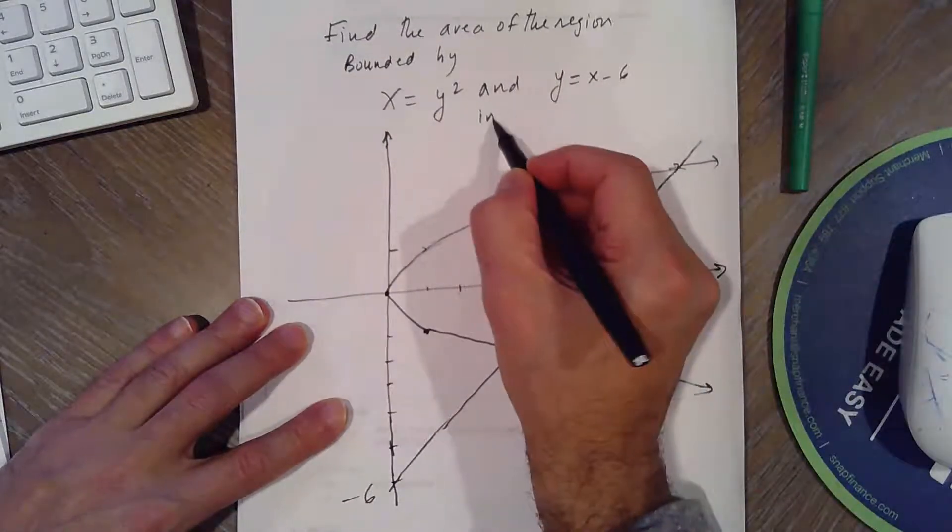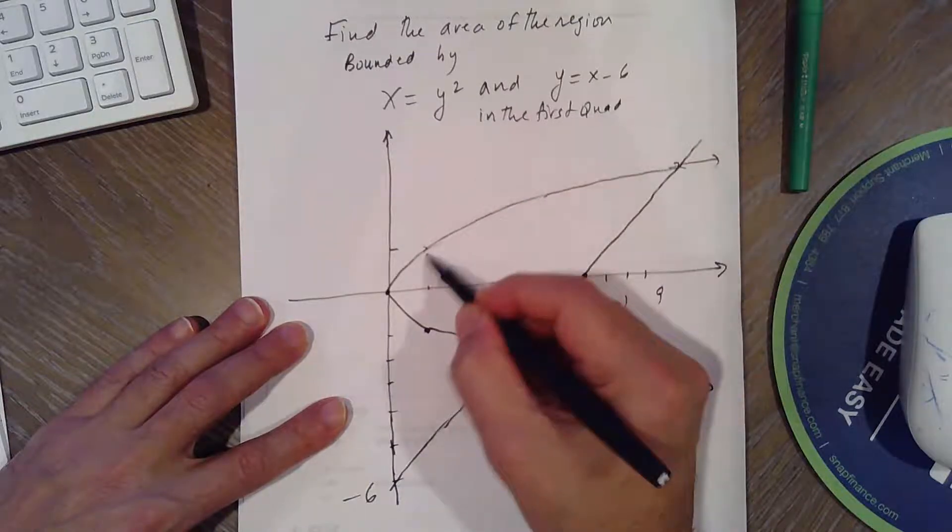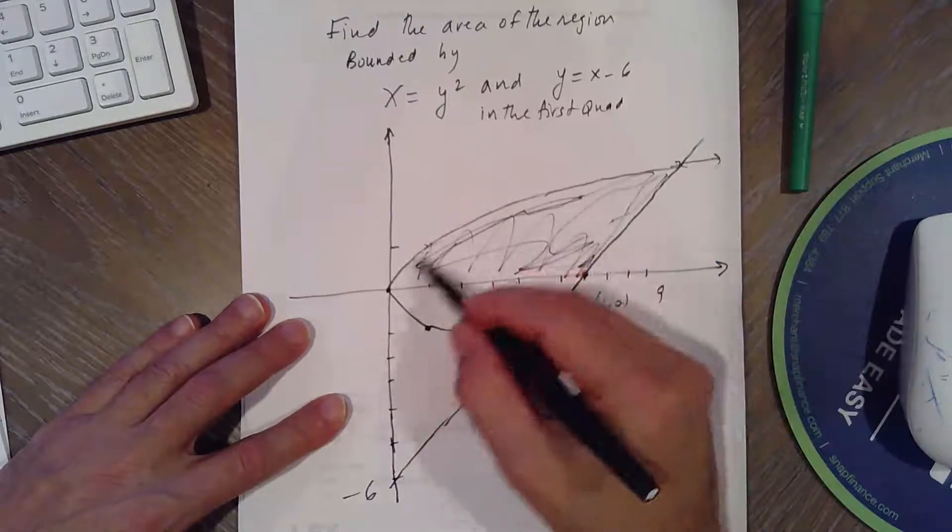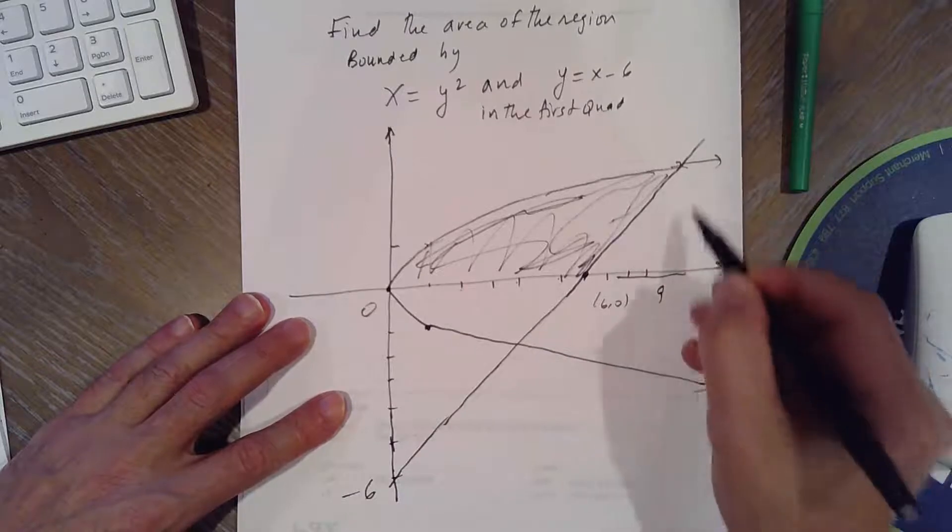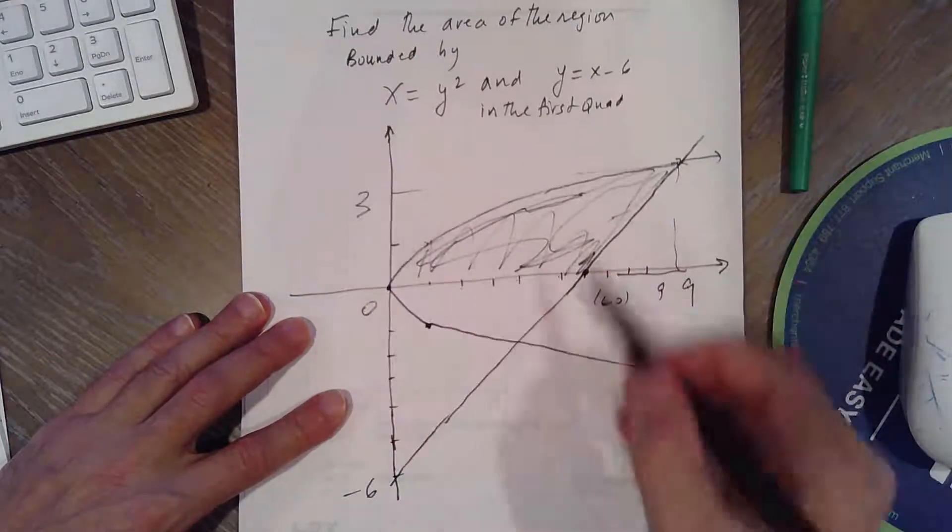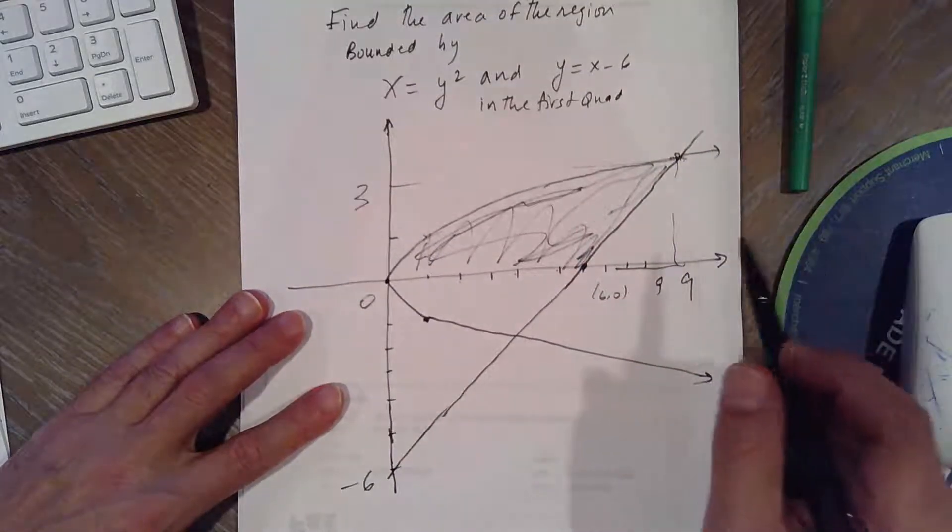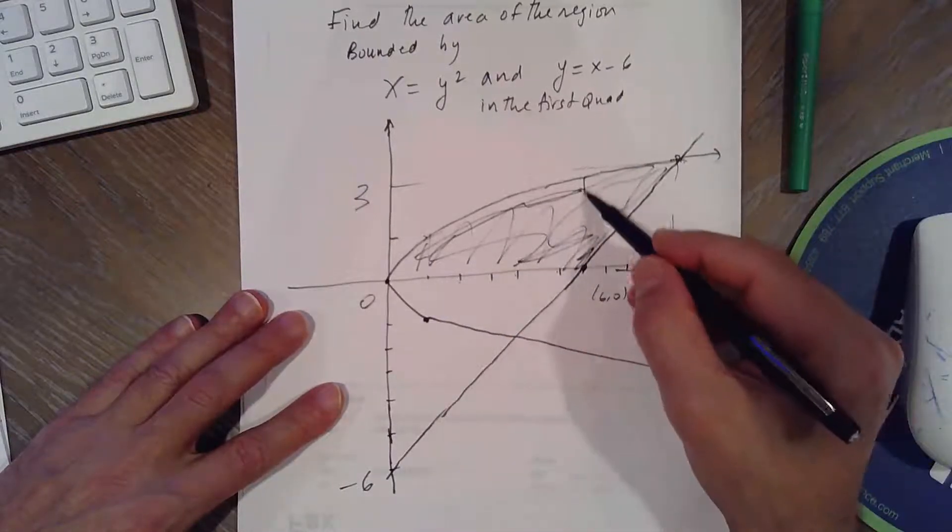And the area we're looking for is in the first quadrant. So we want this area. If we do upper, so from X equals 0, this is going to be X equals 9, actually, because square root of 9 is 3, and 9 minus 6 is 3. So they intersect at that point. So if you do upper minus lower, up to 6.